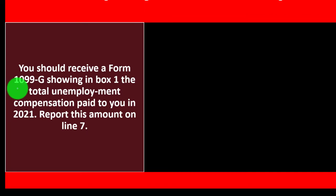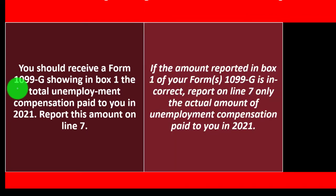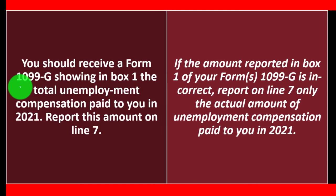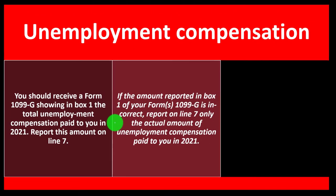Report this amount on Line 7. If the amount reported in Box 1 of your Form 1099-G is incorrect, report on Line 7 only the actual amount of unemployment compensation paid to you in 2021. This is becoming more of a problem — it was a big problem in 2020.